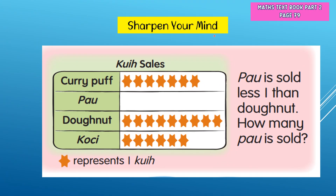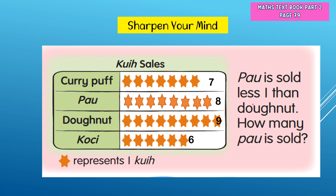Now sharpen your mind. This is a pictograph of kuih sales. There are four types of kuih: curry puff, pau, donut, and kuih kochi. Curry puff sold: seven. Donuts sold: count one to nine — nine donuts. Kuih kochi sold: six. How many pau were sold? Donuts are nine, so one less than nine is eight — eight pau were sold.